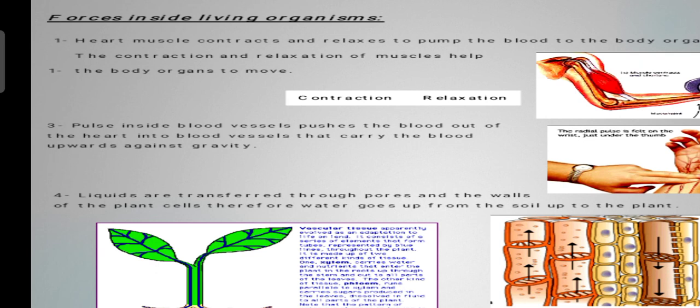So by contraction and relaxation of the heart, the blood moves to all bodies. Number two, the body organs move by contraction and relaxation of muscles. Number three, pulses inside blood vessels push the blood out of the heart into blood vessels.